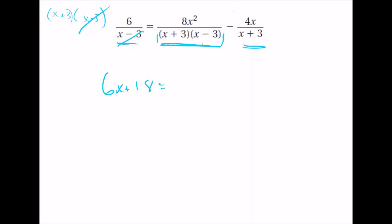The one in the middle, it also gets multiplied by the least common denominator, x plus 3, x minus 3. But of course, those cancel out like that, and we're just left with 8x squared.